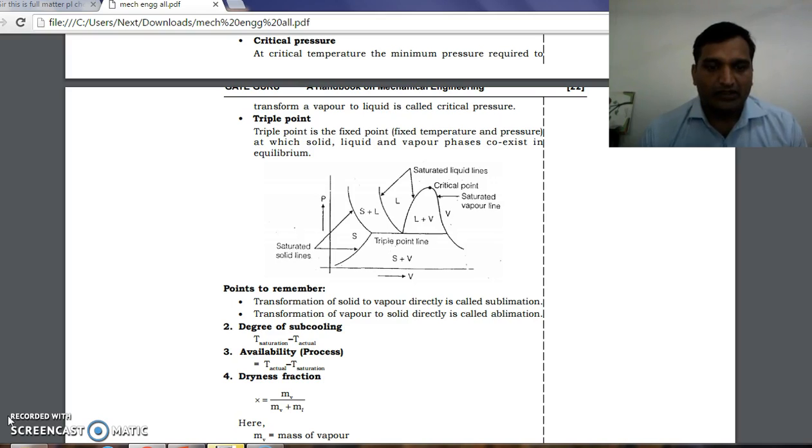Next is availability process. It is the difference between actual temperature and saturation temperature. So we can write T_actual minus T_saturation.